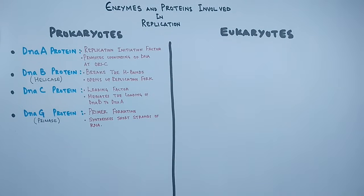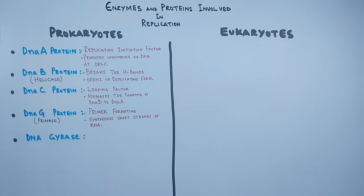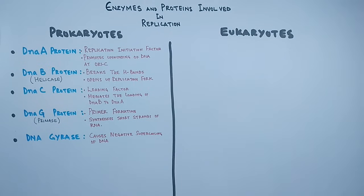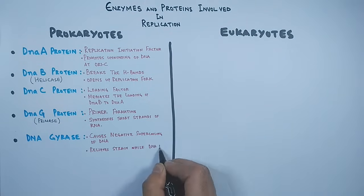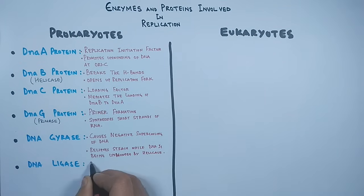Then we need DnaG protein in prokaryotes, which is a primase enzyme. It synthesizes short strands of RNA, because DNA polymerase does not synthesize from scratch — it needs a few nucleotides to work upon, and it is this primase enzyme which provides those nucleotides. Then we have DNA gyrase enzyme, also referred to as topoisomerase II in E. coli. It causes negative supercoiling of DNA strands so that it relieves stress on the DNA strands while helicase is working.